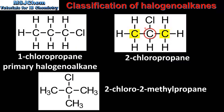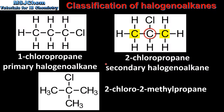If we look at the structure of 2-chloropropane we can see there are two carbon atoms that are directly bonded to the carbon atom that is bonded to the halogen atom. Therefore 2-chloropropane is a secondary haloalkane.